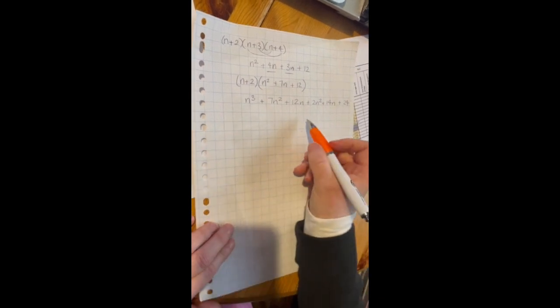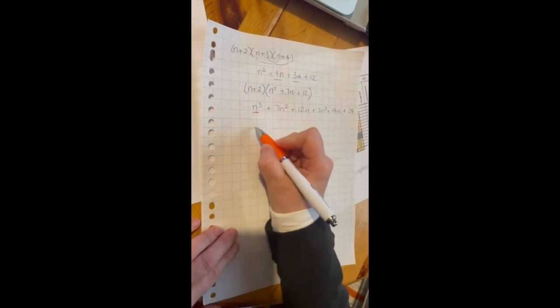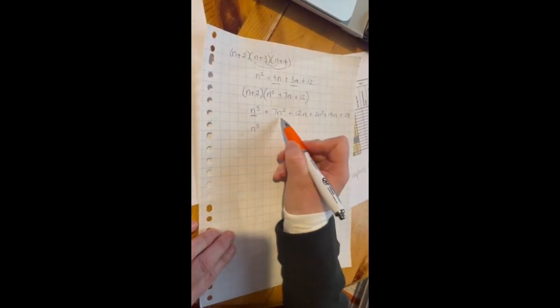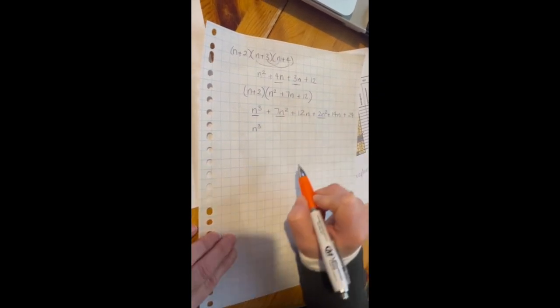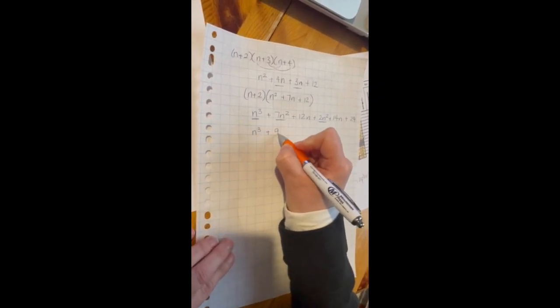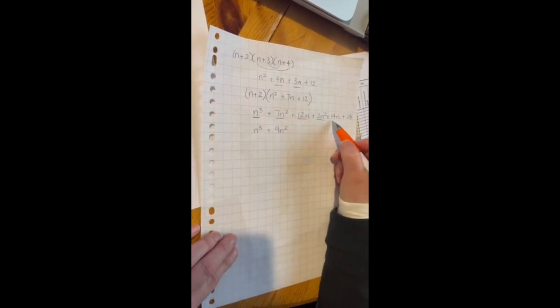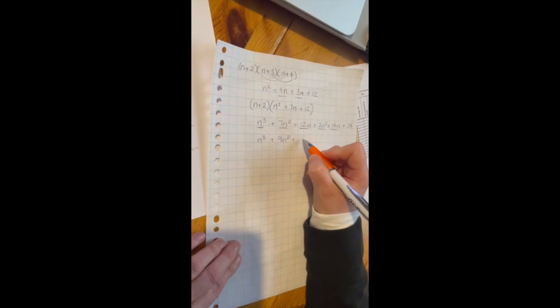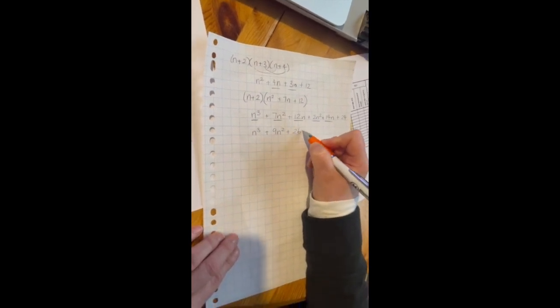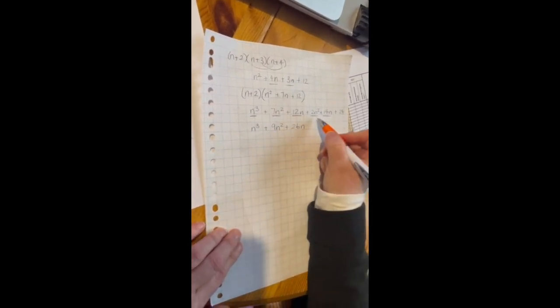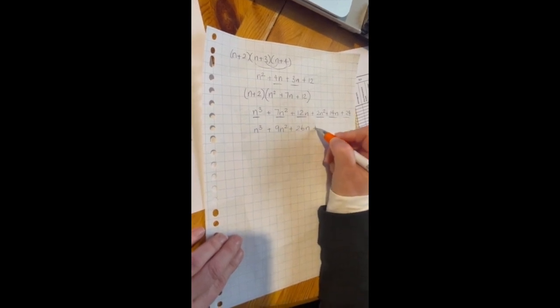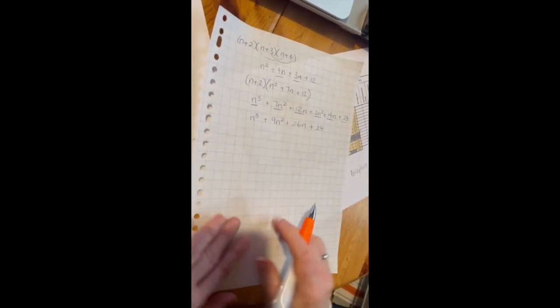And then you simplify. So I've only got one n cubed which is n cubed. I've got 7n squared plus 2n squared, so that's plus 9n squared. I've got plus 12n and plus 14n which is plus 26n. And then I've got plus 24. And that is it multiplied out in the simplest fashion.